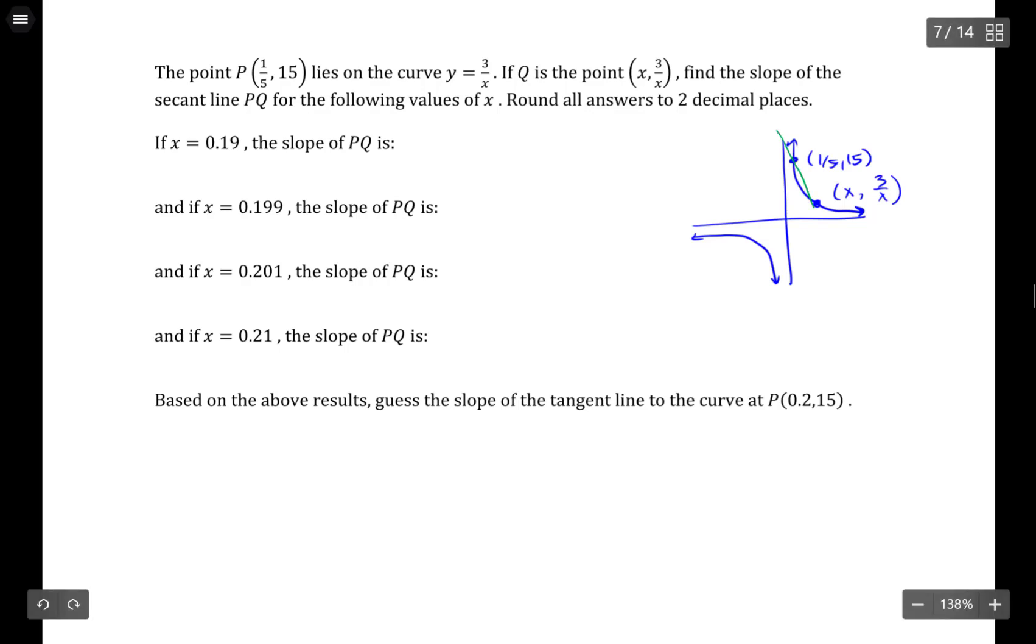So what we're looking for is the slope of the secant line between those two points. And even though the second point is a function, that's still okay. We can still find a slope between those. We can say the slope, which is y2 minus y1 over x2 minus x1, is 3/x minus 15 divided by x minus 1/5. Which is a perfectly fine function to work with, and you could put this right into the calculator now and use it to come up with the answers to this question.